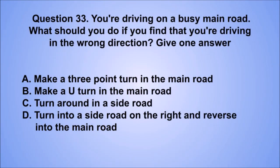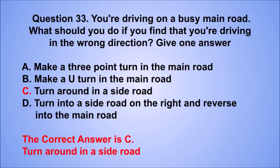Question 33. You're driving on a busy main road. What should you do if you find that you're driving in the wrong direction? Give one answer. A: Make a three-point turn in the main road. B: Make a U-turn in the main road. C: Turn around in a side road. D: Turn into a side road on the right and reverse into the main road. The correct answer is C: Turn around in a side road.